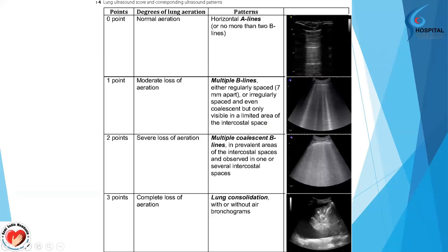This is how we quantify the pathologies seen in lung ultrasound. There are four scoring points from 0 to 3, depending on the degree of aeration. Score 0 represents normal aeration, score 2 indicates severe loss of aeration, and score 3 means complete loss of aeration. Each score gives different images and different interpretations.